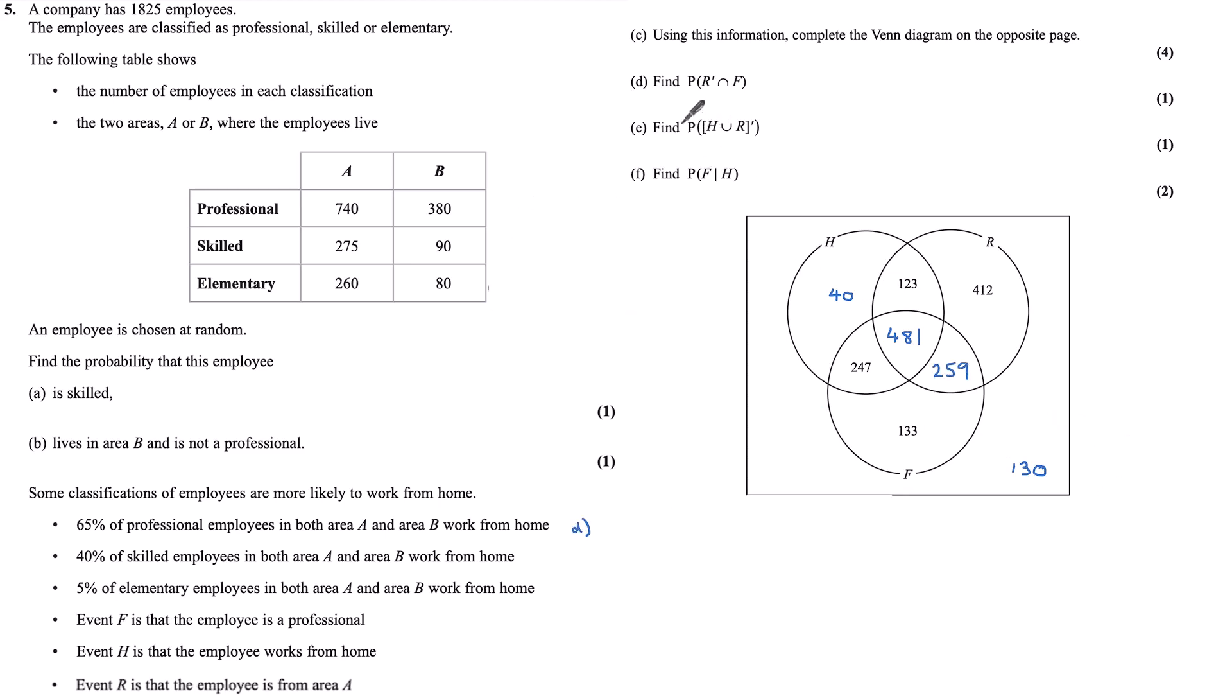Part D. I want to find the probability that someone is not from area A and is also a professional. So I'm looking for the number of employees that are not from area A but are professional. Well, I already know that from this table to be 380. If I'm using my Venn diagram, the numbers that are not from R but are professional are this 247 plus 133, which is 380 over 1,825. So two different ways of getting that answer there.